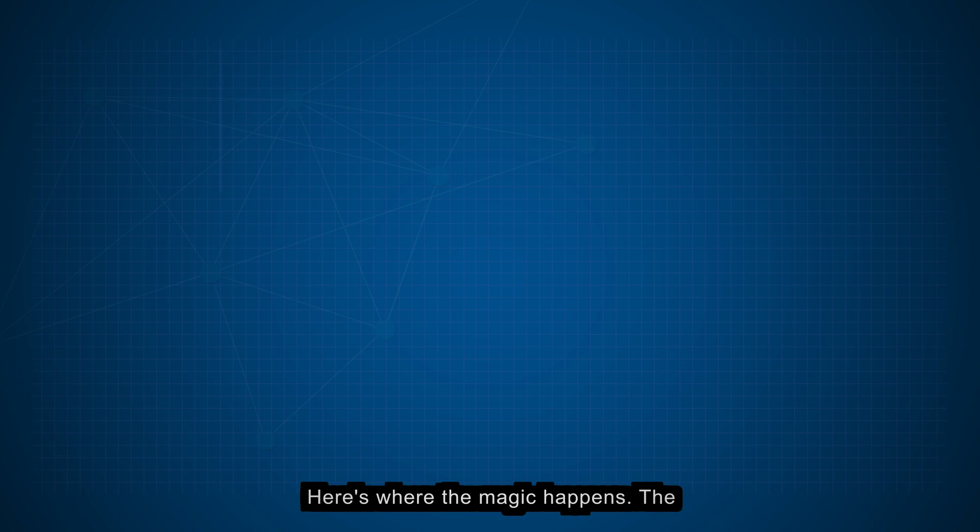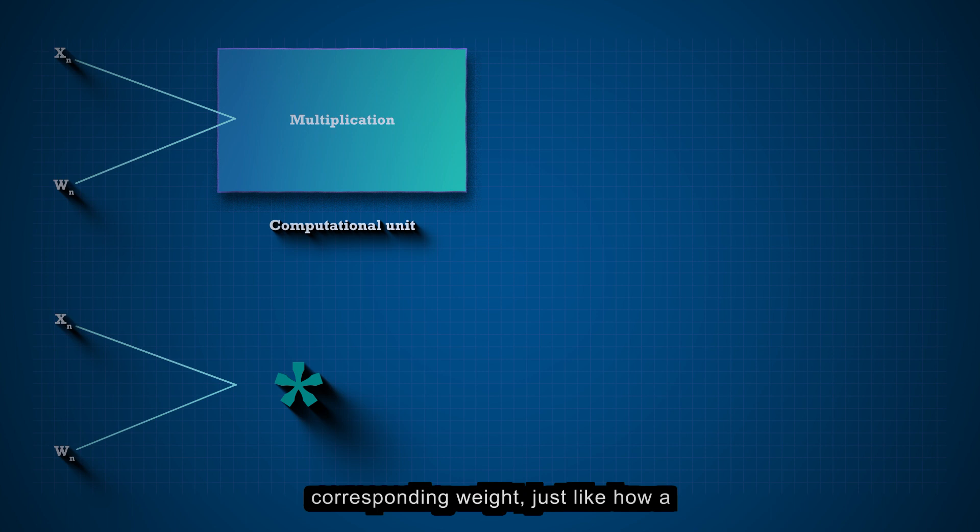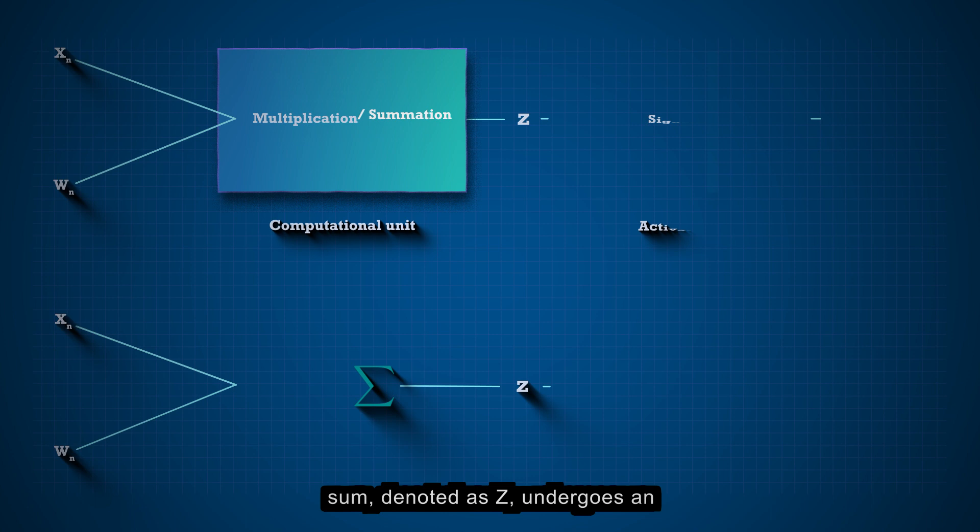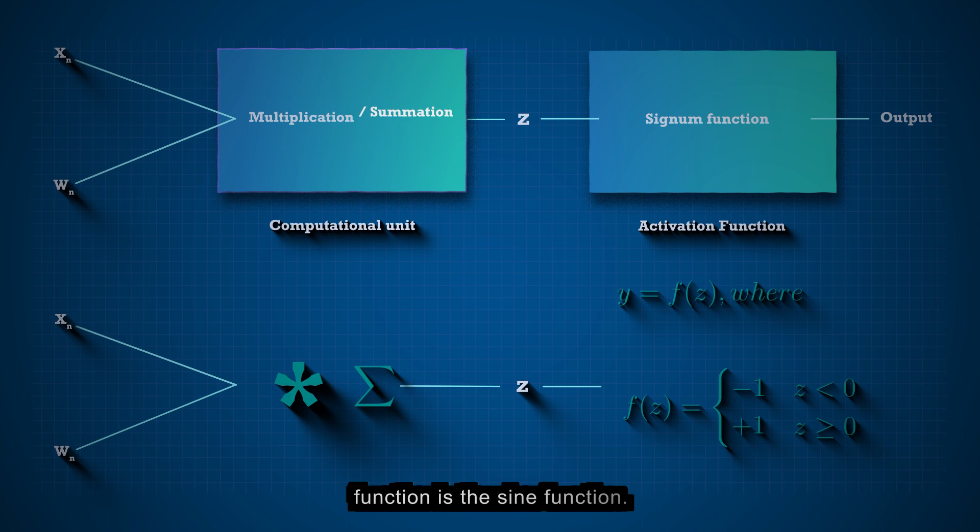Here's where the magic happens. The Perceptron's computational unit multiplies each input value by its corresponding weight, just like how a dendrite processes incoming stimulus. Then, these weighted inputs are summed up, mimicking the neuron cell body's integration of signals. The resulting sum, denoted as z, undergoes an activation function y equals f of z. And for the Perceptron, this activation function is the sign function.